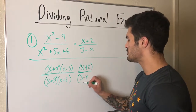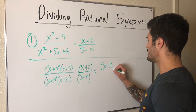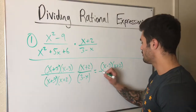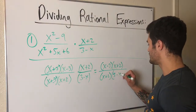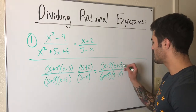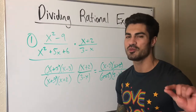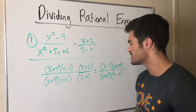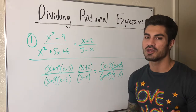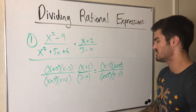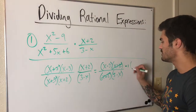I'll combine this into one big fraction: (x-3)(x+2)(x-3)(x+2) on top, over (x+2)(3-x) on the bottom. The (x+2)'s cancel, and now I have (x-3) over (3-x). They're almost the same — there's a little trick we can do to cancel them. We can factor out a negative 1 from either one.